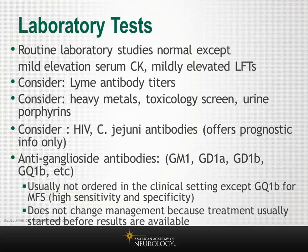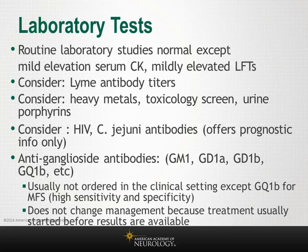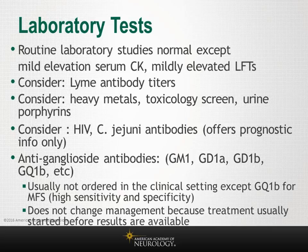Campylobacter jejuni antibodies offer only prognostic information. Anti-ganglioside antibodies were studied extensively in the 1980s and 90s but generally do not change management and are not routinely ordered. The exception is in suspected Miller-Fisher or Bickerstaff's brainstem encephalitis, when GQ1B antibodies are ordered given their high sensitivity and specificity. However, for most patients, antibody results are not available before treatment is initiated.